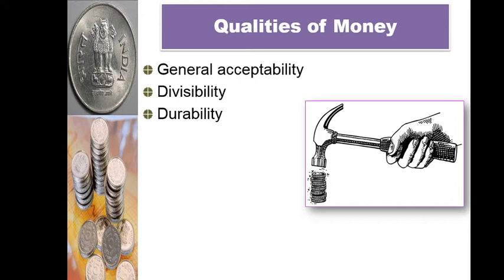If Mr. A gives currency notes and coins to Mr. B, Mr. B gives them to Mr. C, C to D, and so on up to any number of persons — it can be used repeatedly as a means of exchange without any loss in value. So currency notes and coins are used repeatedly for years together on account of durability, meaning money must be durable in nature.